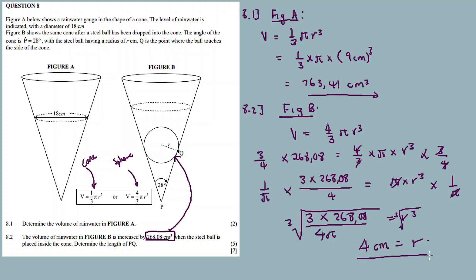So the radius of the sphere is 4 centimeters. Now we need to find PQ. If we draw a line from the apex of the cone down to where the ball touches the side, this line is divided by the angle. The half-angle of the cone is 14 degrees.